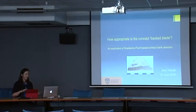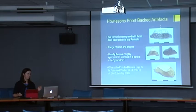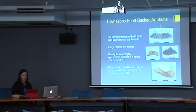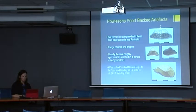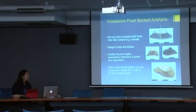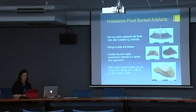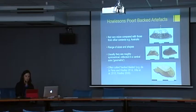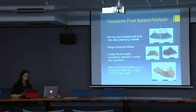I'm looking at backed artefacts and blank selection processes in Southern Africa. Howison's Port backed artefacts are not very micro compared with those from other contexts like Australia. They come in a range of sizes and shapes, but usually they're roughly symmetrical, reflected in a central axis which is perpendicular to the cord, and for this reason they're often described as geometric. A common narrative in Howison's Port literature is the description of backed artefacts as having been made on blades, or the use of the term 'backed blade' as synonymous with 'backed artefact'.